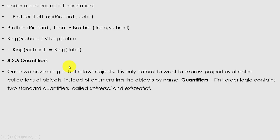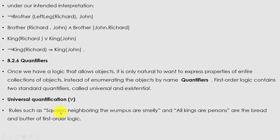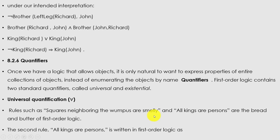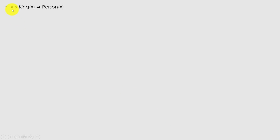Next we talk about quantifiers. Once we have a logic that allows objects, it is natural to want to express properties of entire collections of objects instead of enumerating them by name. First-order logic contains two standard quantifiers: universal (∀) and existential (∃). Rules such as 'squares neighboring the wumpuses are smelly' and 'all kings are persons' are the bread and butter of first-order logic.